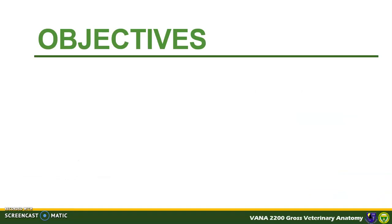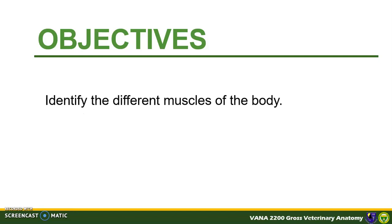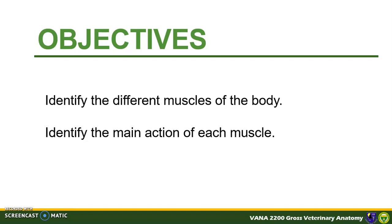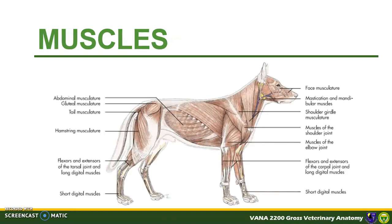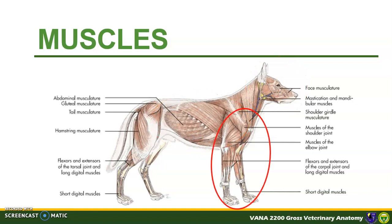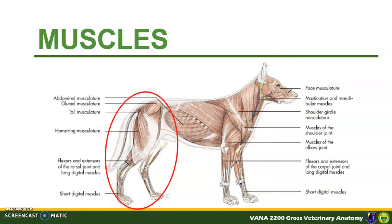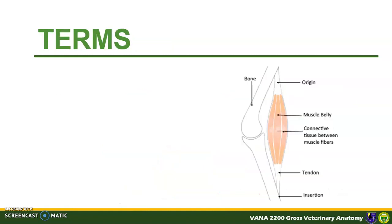At the end of this module, you should be able to identify the different muscles of the body and identify the main action of each muscle. The bulk of the muscles in the body is skeletal muscle. Here is the general overview of the group of muscles that you will be studying in this module: the muscles of the head, the muscles of the trunk, the muscles of the thoracic limb, and finally the muscles of the pelvic limb. But before we start, let us discuss some important terms that are necessary in studying muscles.